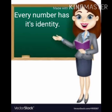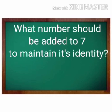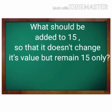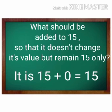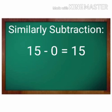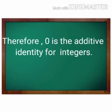Now tell me, what number should be added to 7 to maintain its identity? It is 7 plus 0 is equal to 7. What should be added to 15 so that it doesn't change its value but remains 15 only? It is 15 plus 0 is equal to 15. So 0 is the additive identity of any number. Similarly for subtraction, 15 minus 0 is equal to 15. Therefore, 0 is the additive identity for integers.